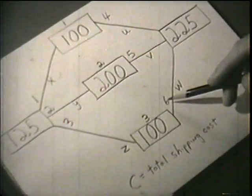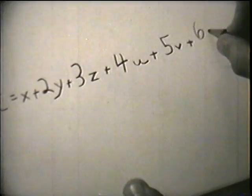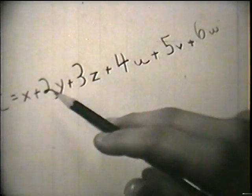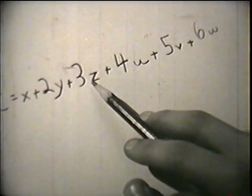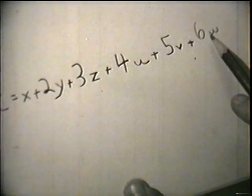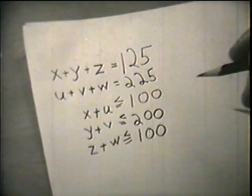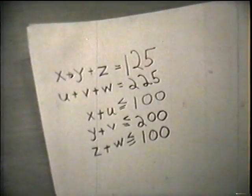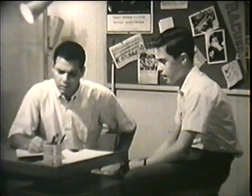Do you have it written down? Yes, C equals X plus 2Y plus 3Z plus 4U plus 5V plus 6W. Fine. So, you see, you have to find the set of values for all these equations and inequalities that give you the lowest value for C.